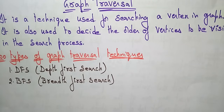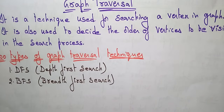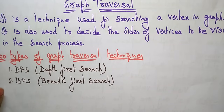Hi students, let us continue with the topic graphs. In the previous video I explained about the terminologies used in graphs and the different ways of representation: adjacency list, adjacency matrix, and incidence matrix. Now let us see the graph traversal.